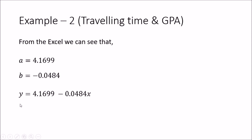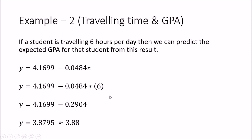Taking the A and B values, the equation is Y equals 4.1699 minus 0.0484X. If I want to predict a value for a student who is traveling 6 hours per day, I substitute X equals 6, and I get the GPA value of 3.8795 — approximately 3.88. From this we can forecast that a student traveling about 6 hours per day will get approximately 3.88 as their GPA.